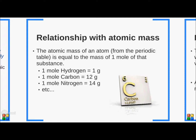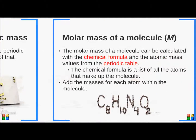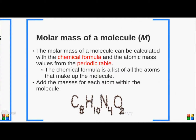Remember that one mole of these atoms is 6.022 times 10 to the power of 23 atoms. Let's move on to something a bit bigger. The molar mass of a molecule can be calculated with the chemical formula of that molecule and the atomic mass values from the periodic table. The chemical formula is simply a list of all the atoms present in the molecule and how many there are of each type. To calculate the atomic mass for a molecule, all you need to do is sum up the masses for each atom within that molecule.